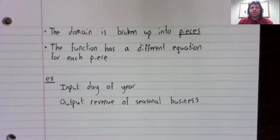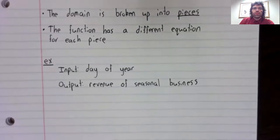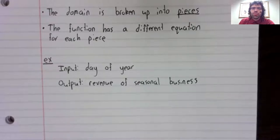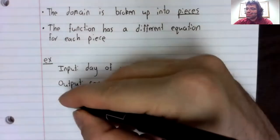Let's say that the input of our function will be the day of the year, so numbers from one to 365. And the output will be the revenue that a seasonal business makes on that day.